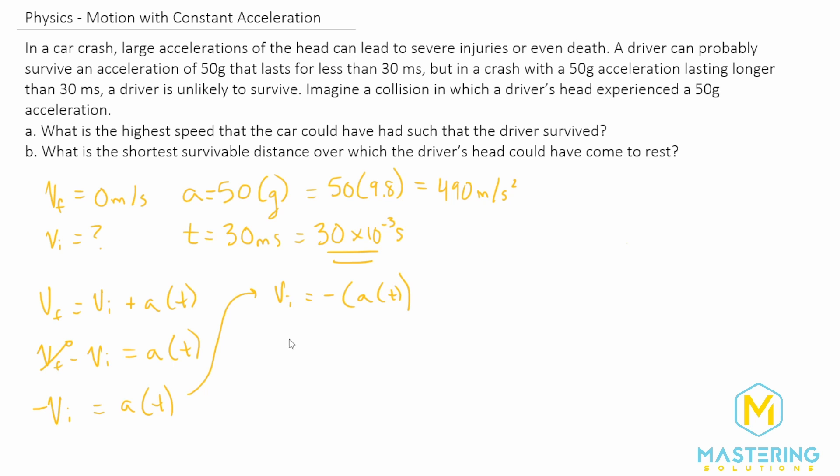So let's plug in the variables for this portion. So we have V initial is equal to a negative acceleration. So now for we have negative and for acceleration, we solved it for 490 meters per second squared.